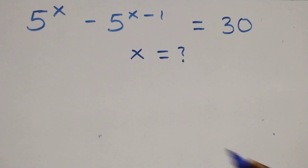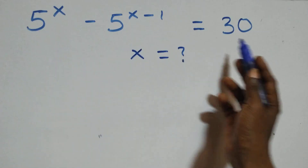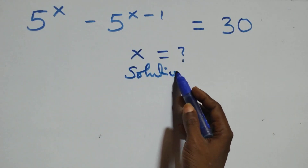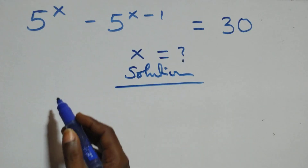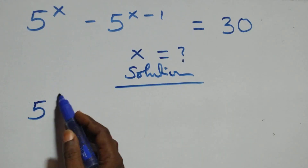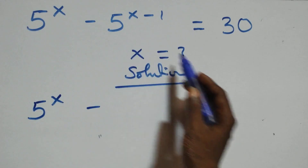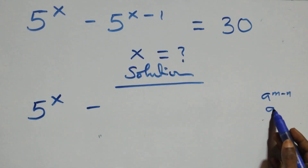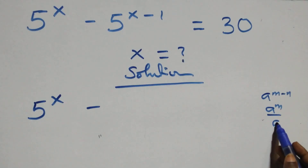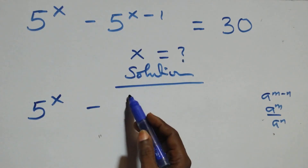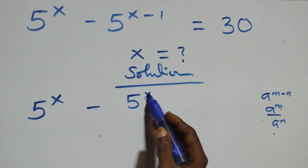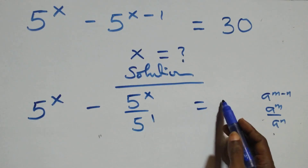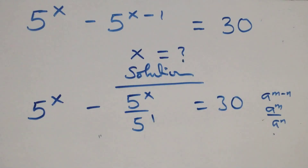Hello, you are welcome. How to solve this nice exponential equation. From what we have here, this becomes 5 raised to power x minus, following the rule that a raised to power n minus n is the same as a raised to power n over a raised to power n. We can write it as 5 raised to power x over 5 raised to power 1 equals to 30 on this side.